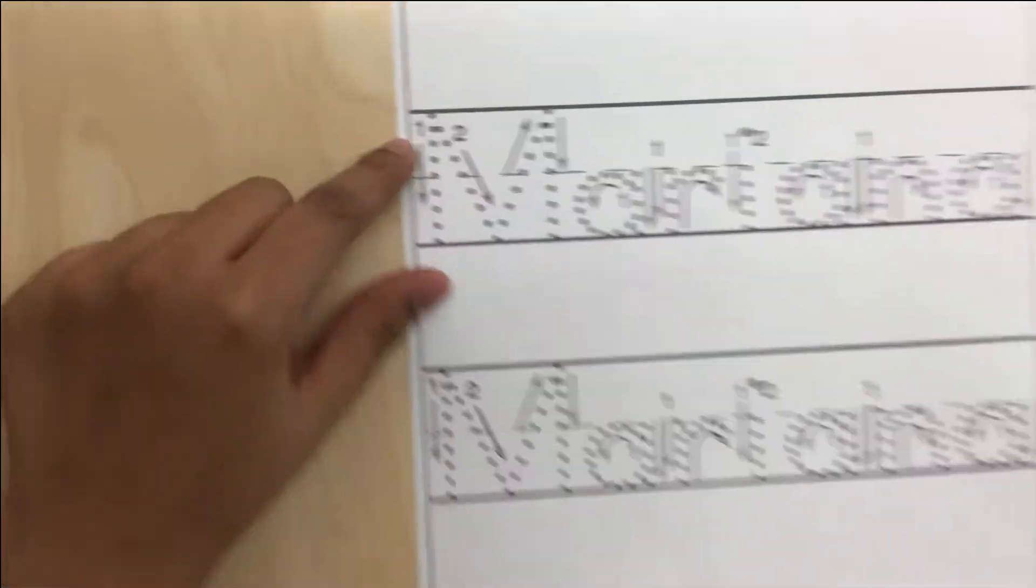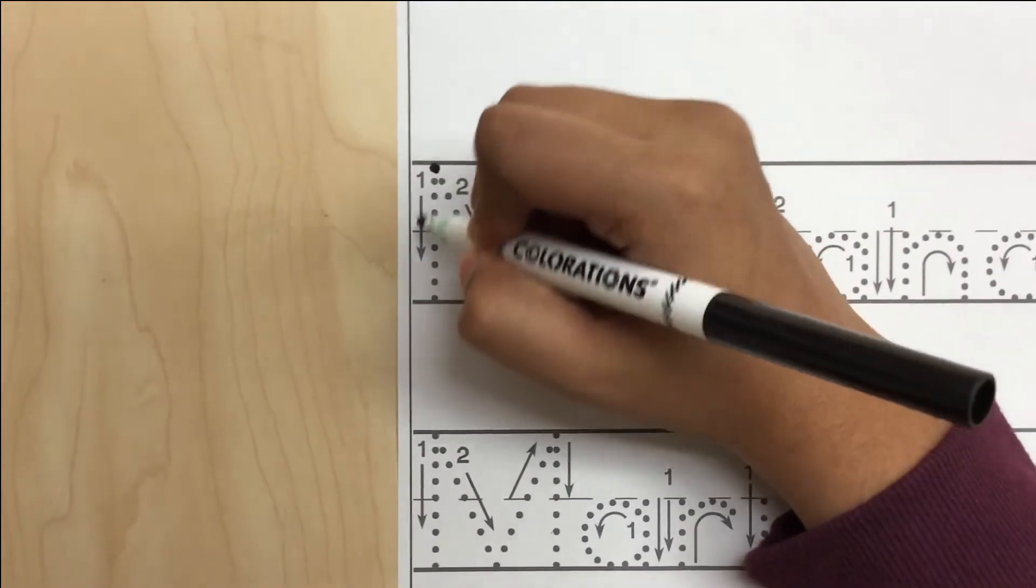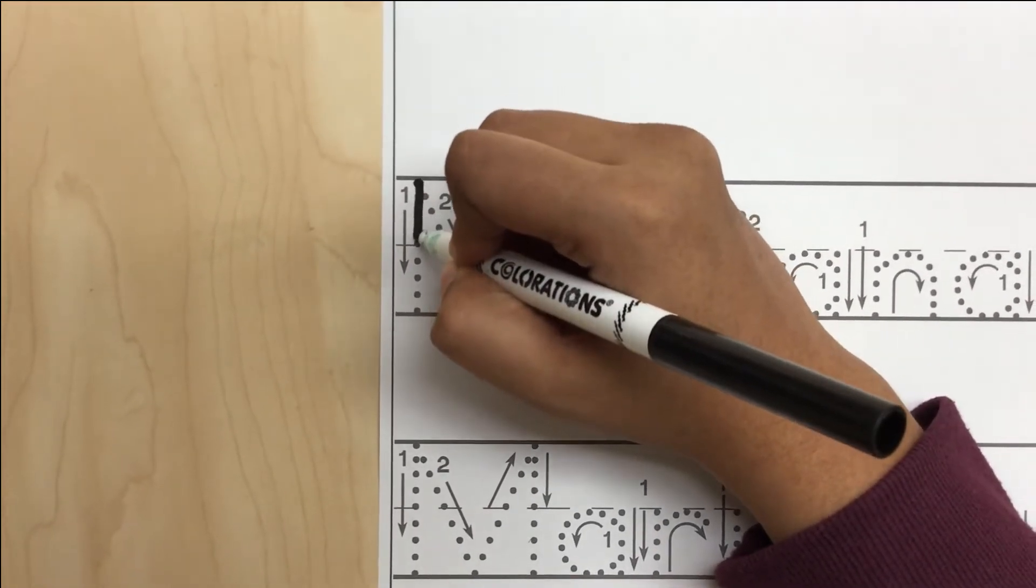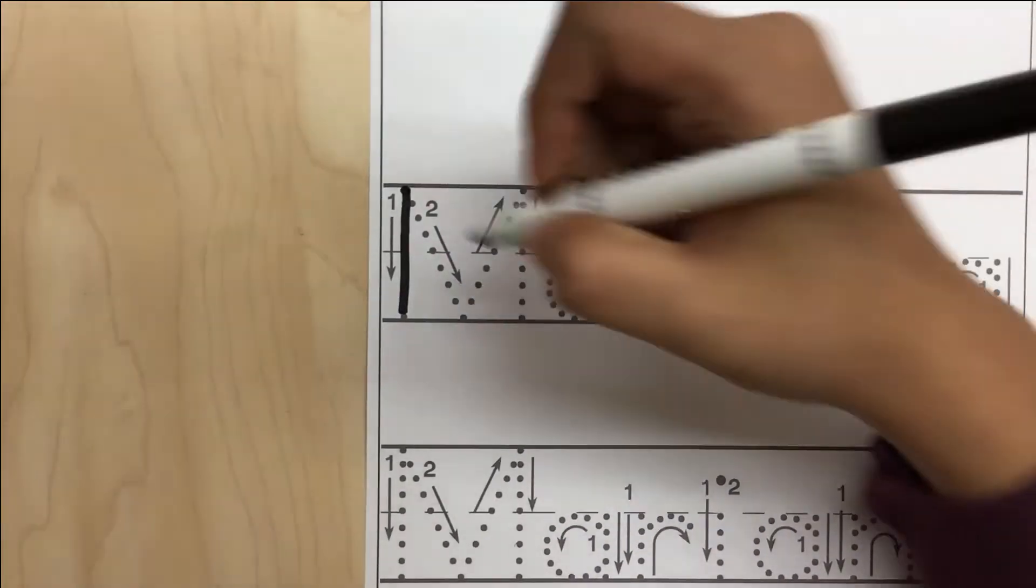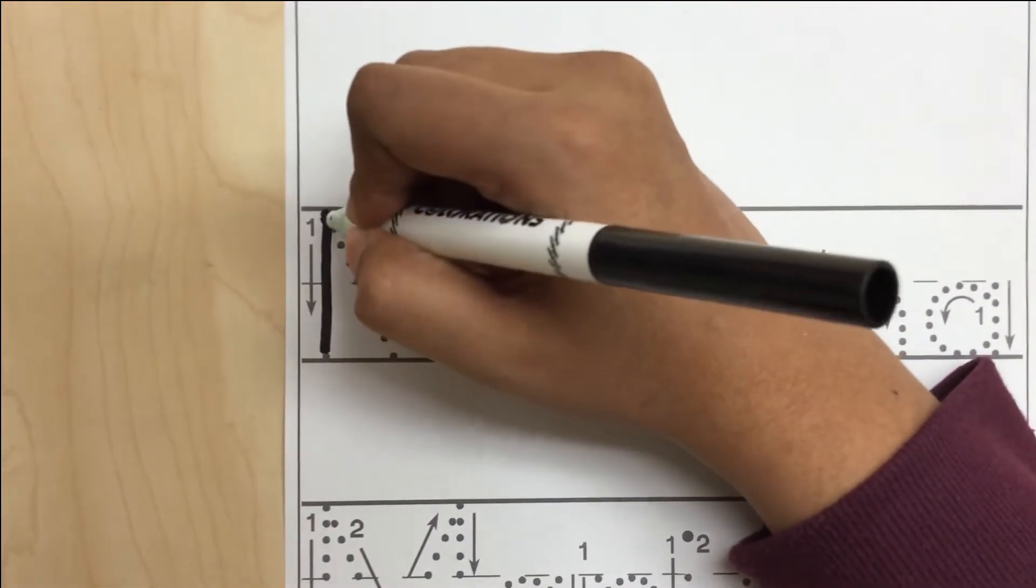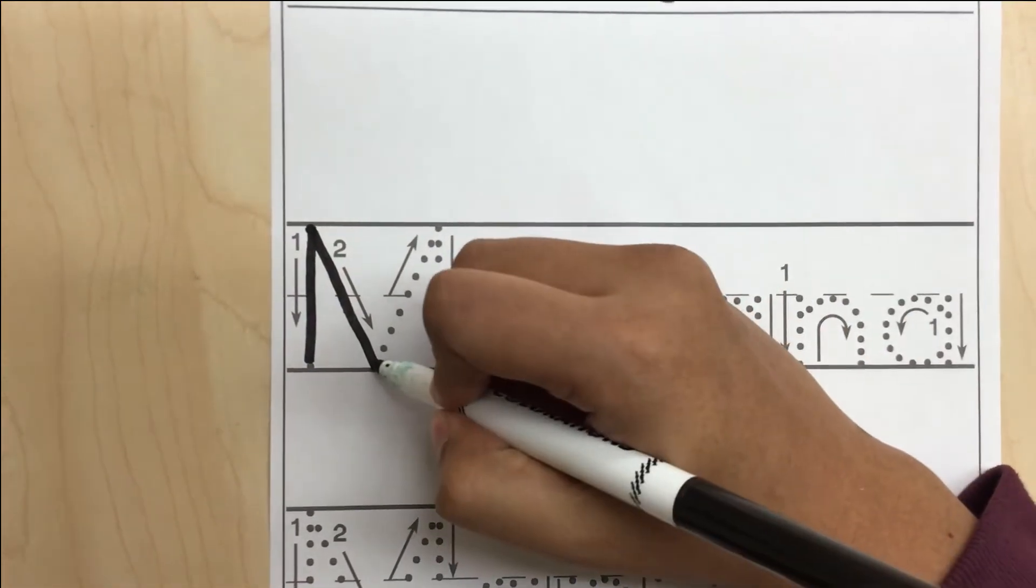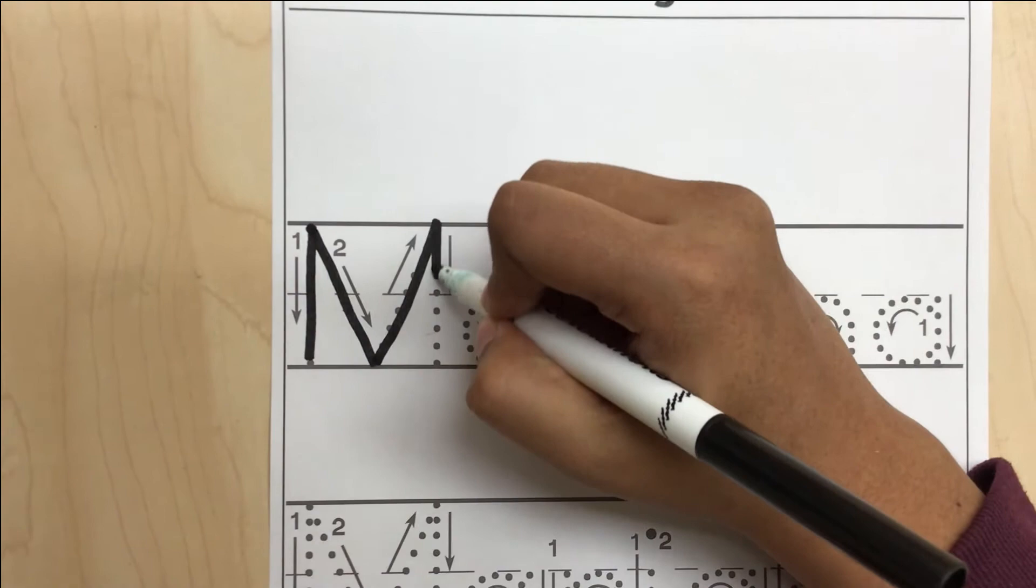You're going to look for number one. You're going to start on the top and follow the arrow down. Then you're going to go back and look for number two and the arrow. You're going to follow that arrow and then up and down.